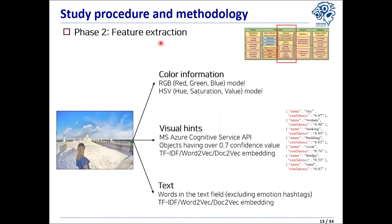At the same phase, we extracted features from posts which have both an image and a text. From the image, we extracted RGB and HSV color information and visual hints. For visual hints, we used Microsoft Azure Cognitive Service API, which returns a list of objects with confidence scores — for example, sky, women, looking, building. We used objects with over 0.7 confidence. We then used TF-IDF to vectorize the visual hints, and checked other embedding methods but used TF-IDF because it showed the best performance.